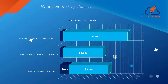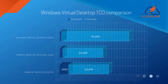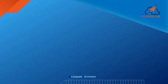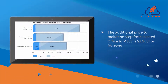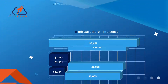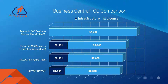The fourth step is WVD. The current RDS solution is running 95 users of hosted Office 2013. The presented WVD environment is based on Microsoft 365. The additional price to make the step from hosted Office to Microsoft 365 in combination with WVD is an extra $1,900 per month for 95 users.